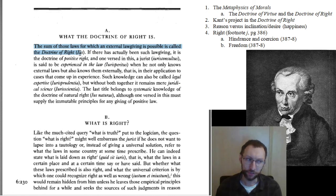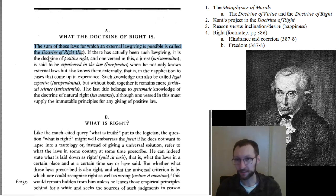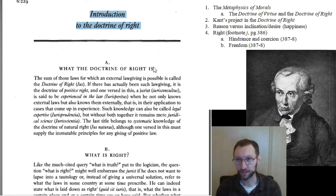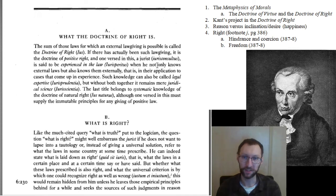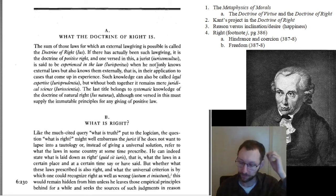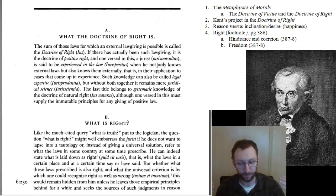Moving on to section three: reason versus inclination, desire, and happiness. This doesn't come up a lot in the introduction or very often in the book, but it sneaks in every once in a while when Kant is talking about ends and means, unification, and things like this. It's good to have this in the back of your mind so you can refer to it to figure out what he's saying.